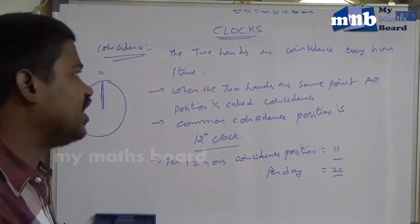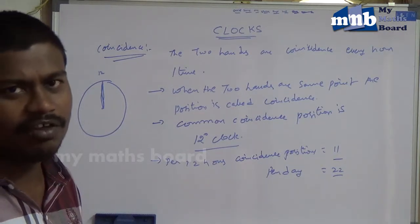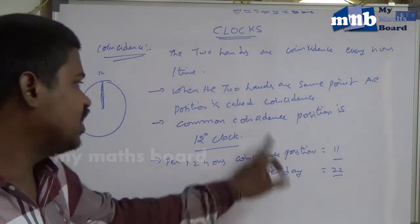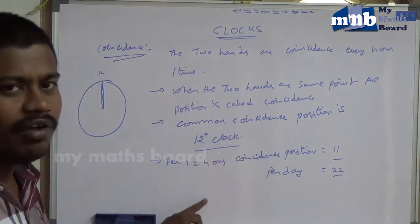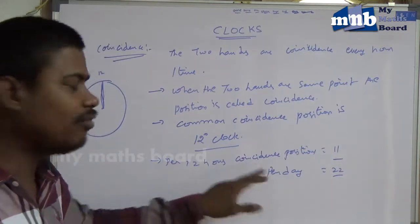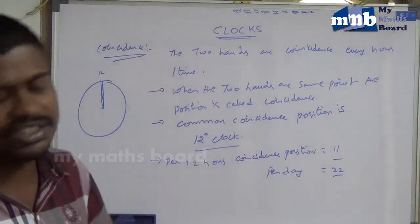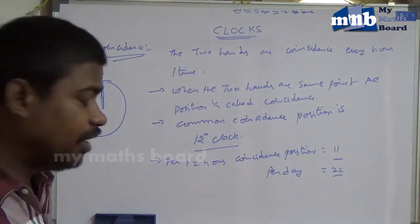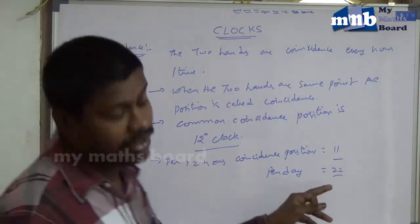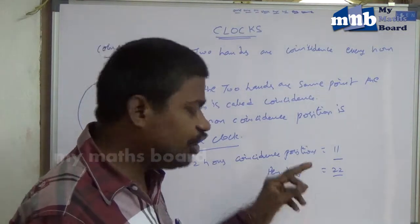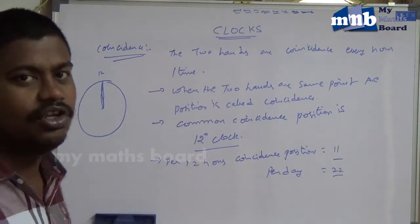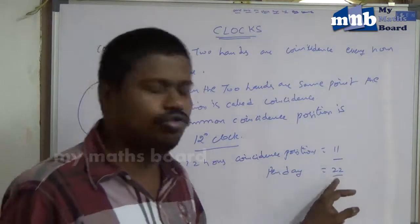When the two hands are in coincidence, for every one hour it is one time, and the common Coincidence Position is 12 o'clock. For 12 hours, the Coincidence Position is equal to 11 times. Per day, the Coincidence Position is equal to 22. According to our theory, per hour one time would give us 24 times per day, but the answer is 22 — because the common Coincidence Position at 12 o'clock occurs two times per day and is not countable. So 24 minus 2 equals 22.